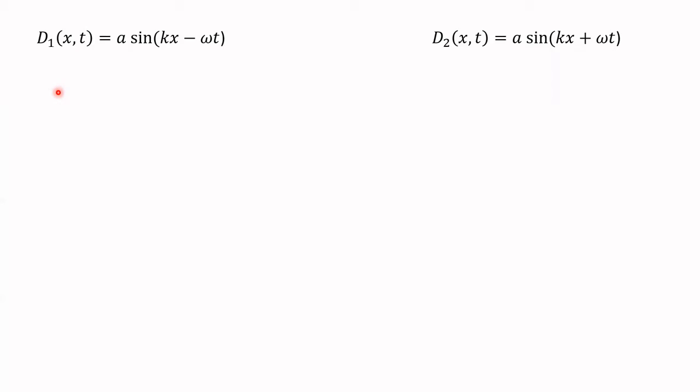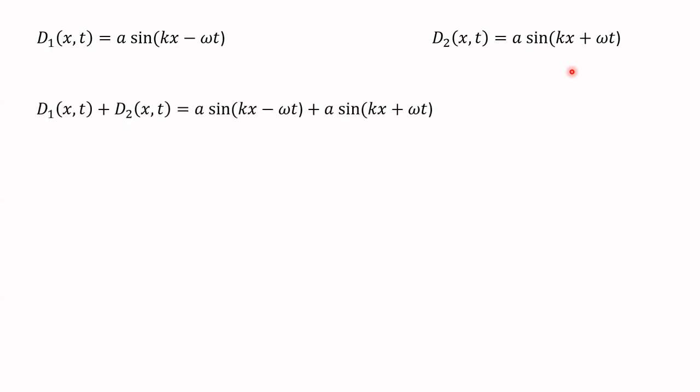This shouldn't be difficult — just a little bit of trigonometry. We've already looked at these sinusoids which depend on position and time. Notice D1 has a minus sign, so D1 is traveling to the right, and D2 is traveling to the left. The total displacement — I say 'disturbance' because in an electromagnetic wave nothing's being physically displaced; it's the change in the electric field. We just add them up. Can we factor out the amplitude A? We're going to need a trig identity.